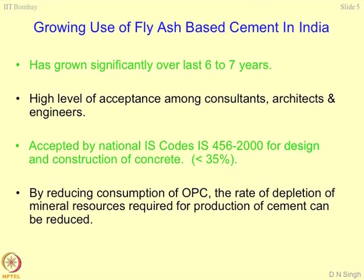The production of OPC itself is anti-environment — emission of a lot of carbon dioxide and other gases, plus natural resources can be conserved by adding fly ash. The whole idea when going for blended cement is to save energy in construction, conservation of minerals and resources, and less pollution and degradation of the environment. By reducing OPC consumption, the rate of depletion of mineral resources required for production of cement can be reduced. This is the beauty of fly ash based cement design.